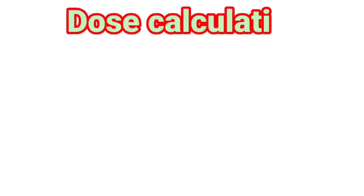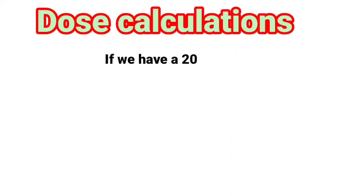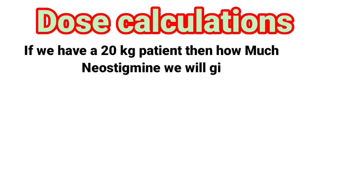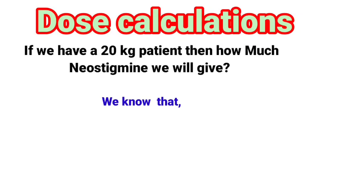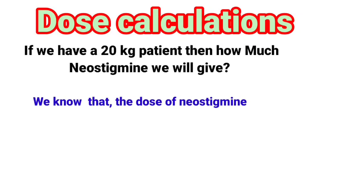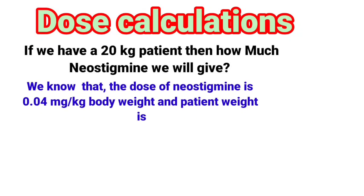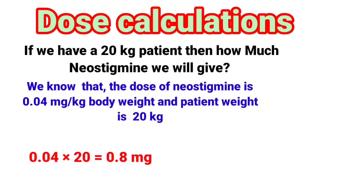Neostigmine dose calculation: if we have a 20 kg patient, then how much neostigmine will we give? We know that the dose of neostigmine is 0.04 mg per kg body weight and patient weight is 20 kg. 0.04 multiply by 20 is equal to 0.8 mg. It means we will give 0.8 mg to a 20 kg patient.